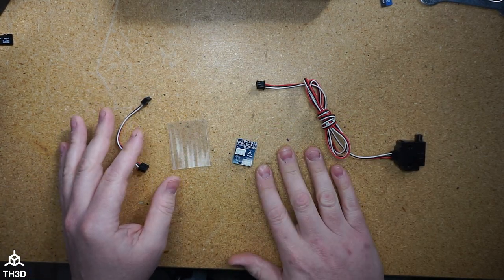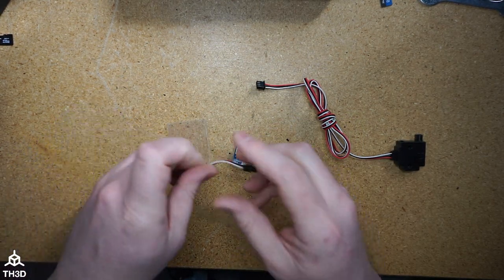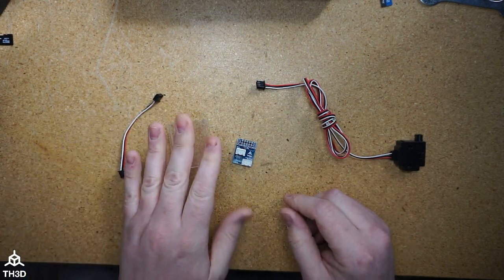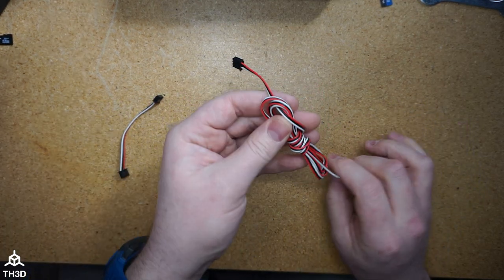Our standard Easy-Out adapter kits consist of the little 3-pin cable, heat shrink, the adapter board, and the cable with the sensor.